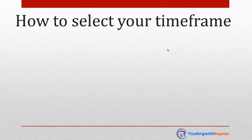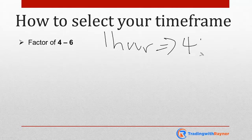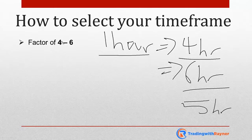Similarly, if you are looking to enter off the weekly timeframe and you go down to the one-hour timeframe to find an entry, again it does not make sense - the weekly is way too far from your entry timeframe. So the question is, how do you find the right balance? Let me share a technique called the factor of four to six - something I read from Alexander Elder, who used it to classify his timeframes. Let's say you're entering off the one-hour timeframe: a factor of four gives you the four-hour timeframe, and a factor of six gives you the six-hour timeframe.